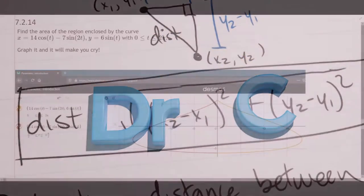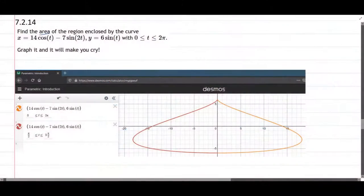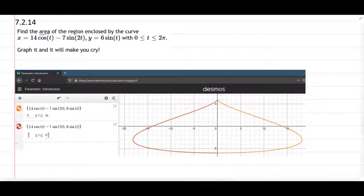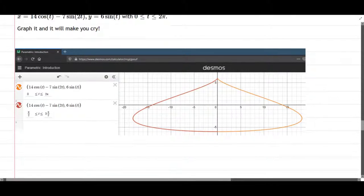We're about to find an area again of a region enclosed by this slightly complicated curve. And I did graph it on Desmos, and that's right here. Now I graphed it twice. In the orange, it went all the way around to make this tear-shaped region right here, or whatever shape you would call that.